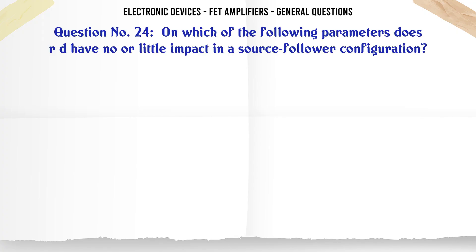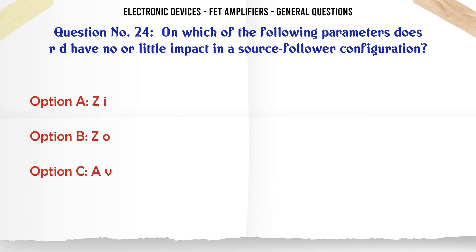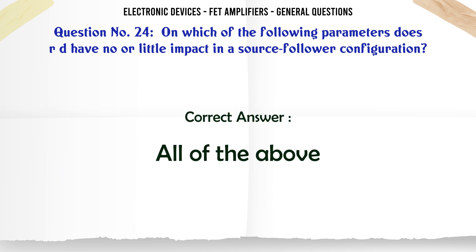On which of the following parameters does RD have no or little impact in a source follower configuration? A. ZI. B. ZO. C. AV. D. All of the above. The correct answer is all of the above.